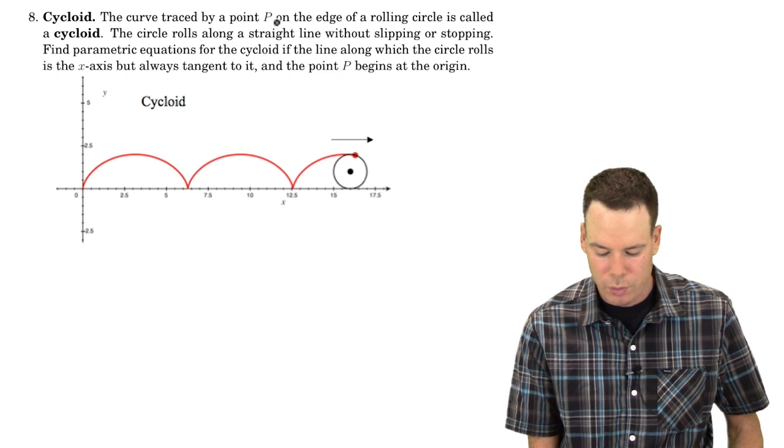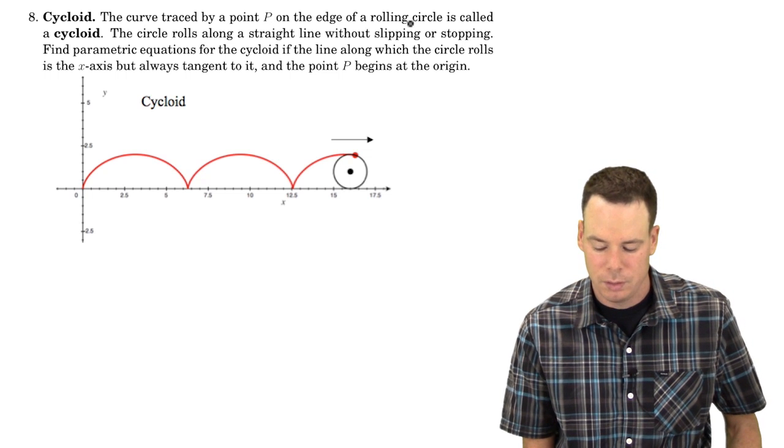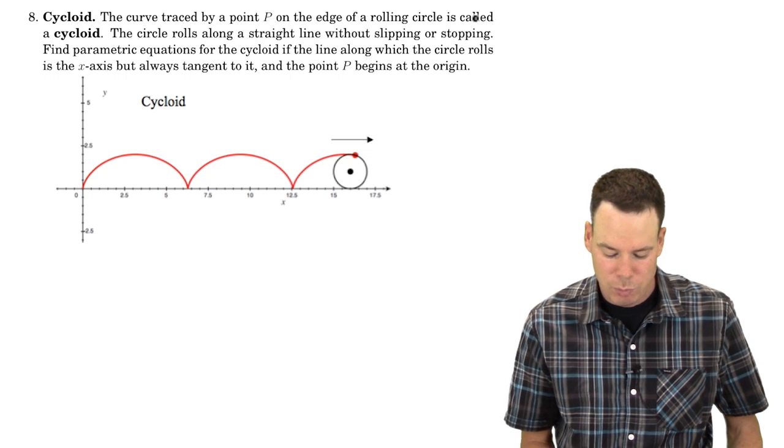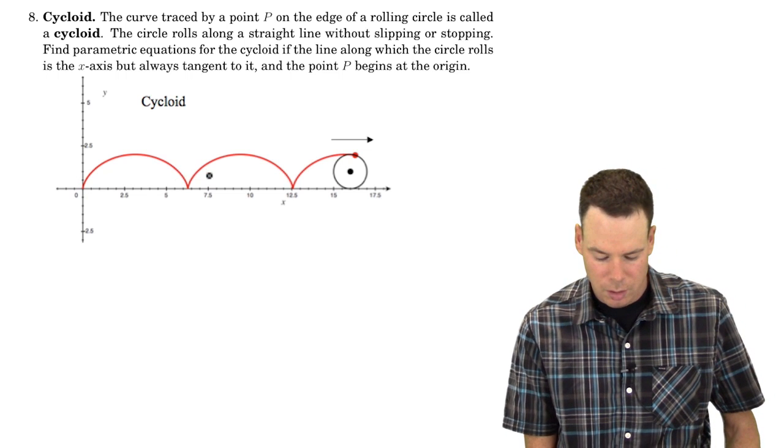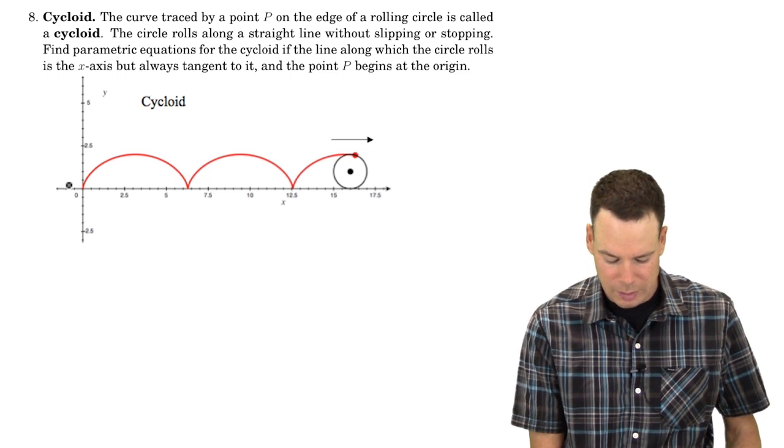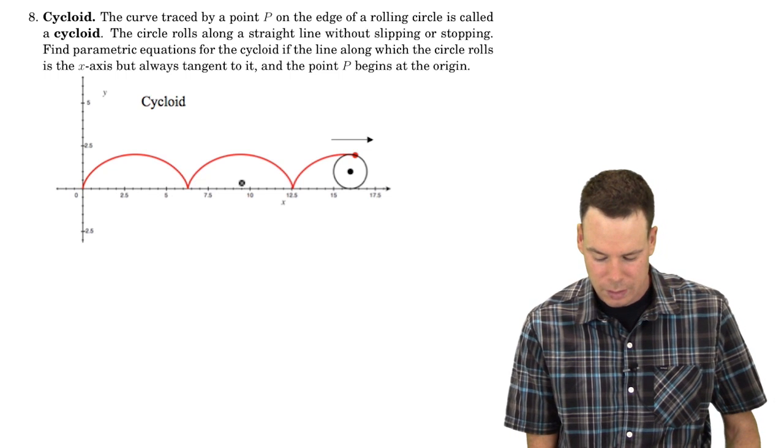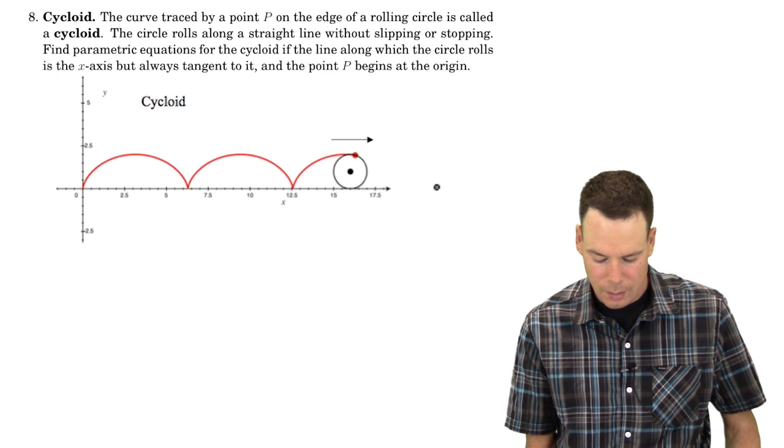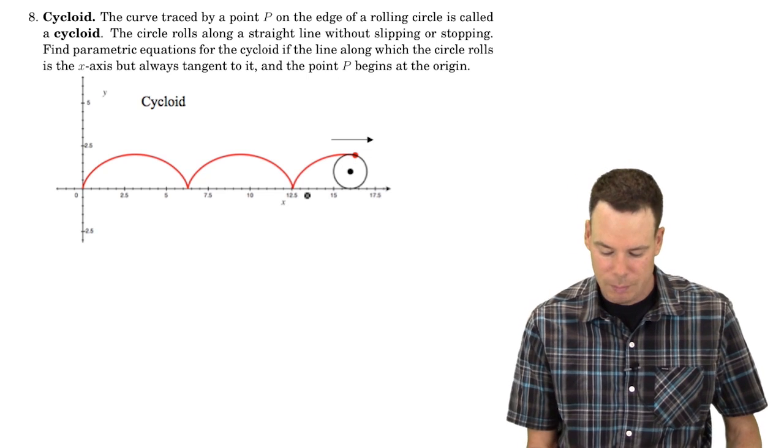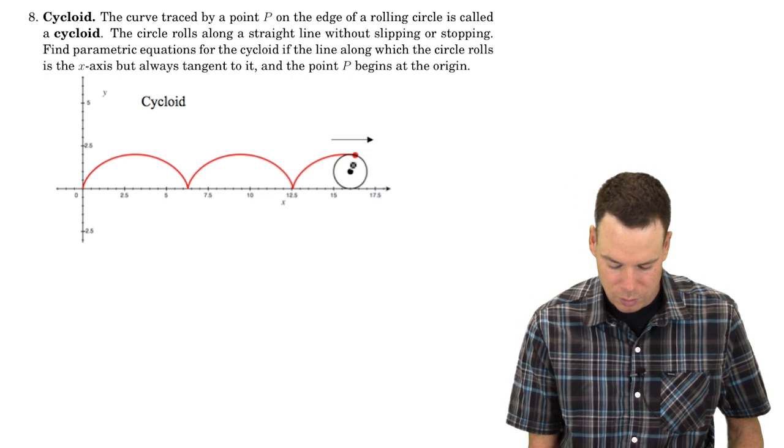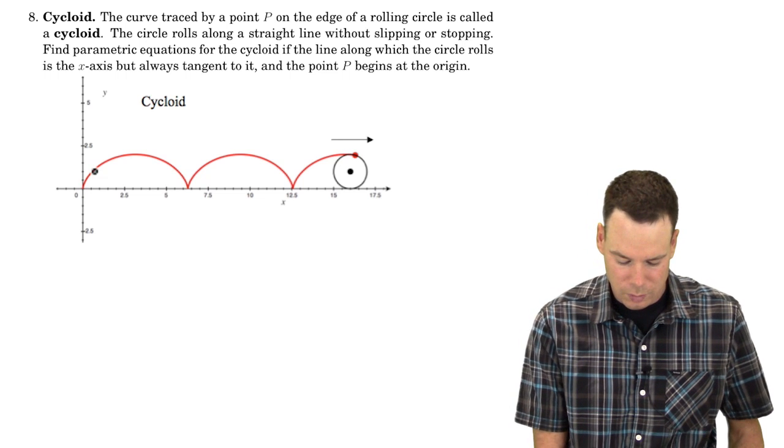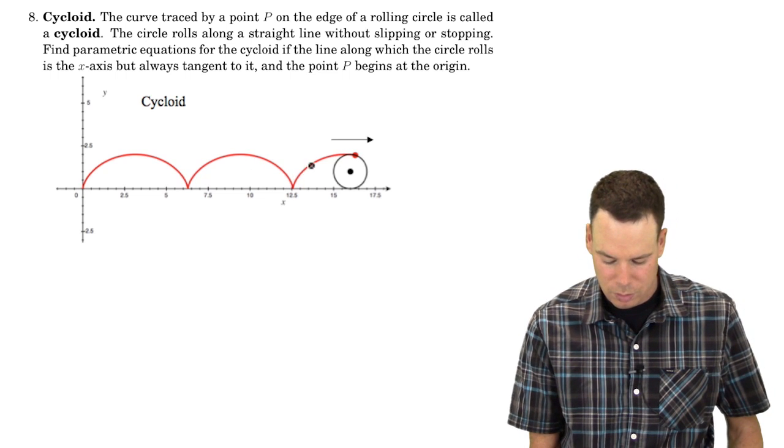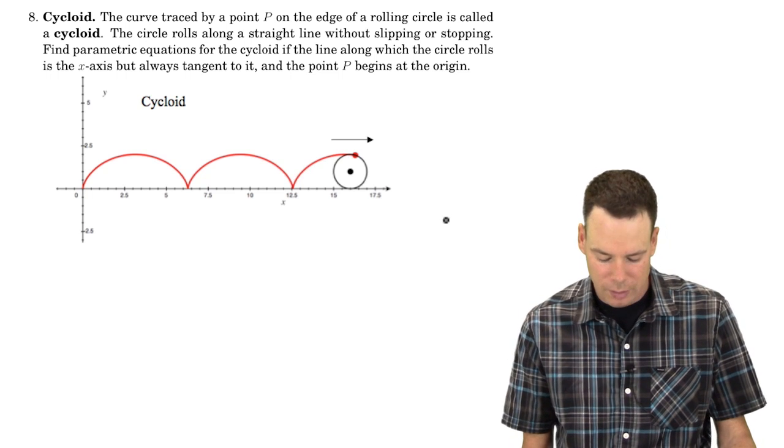Well, a curve traced out by a point on the edge of a rolling circle is called a cycloid. In this particular example we're going to consider the circle rolling along a horizontal surface, so in that case it's going to be rolling along the x-axis. We assume that the circle rolls without slipping or stopping, so it continually rolls and this point on the circle is going to trace out a curve. It's going to be this trail that's left in red here.